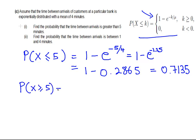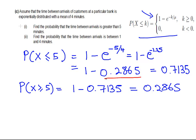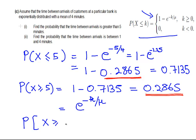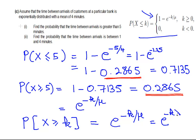The probability of X greater than or equal to 5 equals 1 minus 0.7135, and that is equal to 0.2865. Note that this can be done the direct way: in general, the probability of X greater than or equal to k is e to the power of minus k over mu, or equivalently k times lambda. So the answer to the first question is 0.2865.